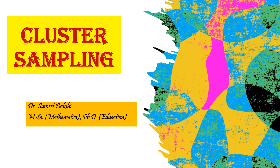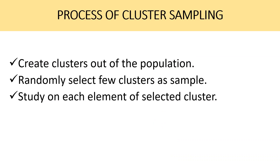The process of cluster sampling involves three steps. First, create clusters out of the population. Then, researchers randomly select few clusters as samples. The third step is to study each element of the selected clusters.